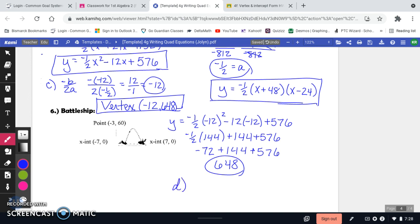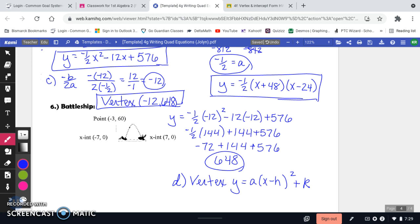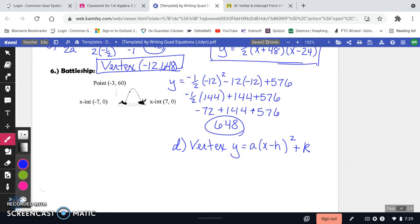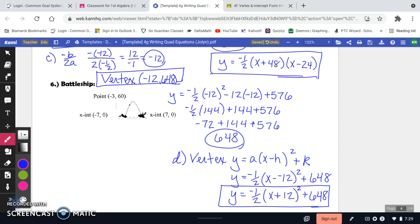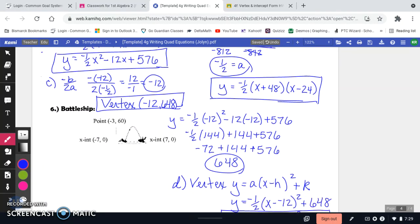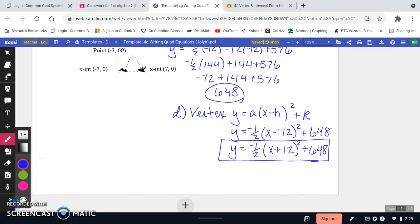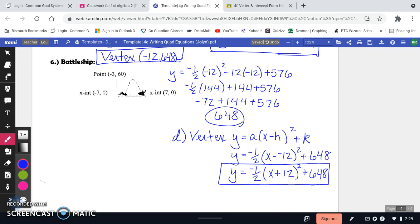So then last part, vertex form. So remember vertex form is Y equals A times X minus H quantity squared plus K. All right, so we have all of the pieces we need. We already found A previously to be negative 1 half. And then we just found our vertex. So it's going to be H or X minus our H. Our H is a negative 12, and then our K is 648. So I'm just going to clean up my signs. And there it is. So you have this one written in all three versions. You have the standard form, intercept form, and vertex form. So now you can finish up this last example. Have a good day.